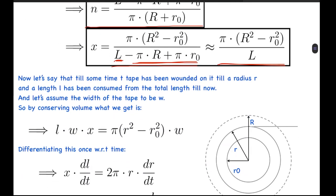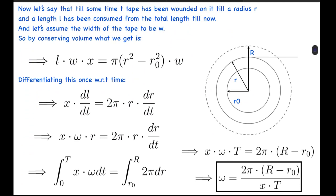Now let's say that till some time t, tape has been wounded on it till the radius r, and the length l has been consumed from the total length till now. Let's assume the width of the tape to be w. By conserving volume, what we get is l·w·x equals π(r² - r0²)·w. This value is the tape accumulated till now in this region, and this value is actually the volume when l length has been wounded till now.